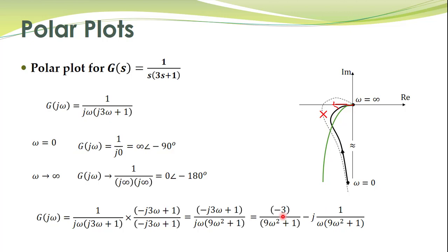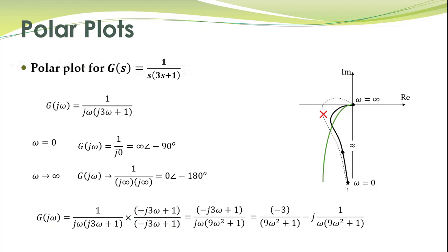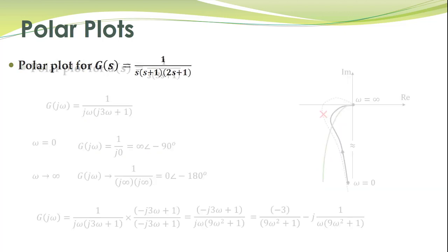So what you see is that as omega tends to infinity, the real part becomes minus 3. So this minus 3 is over here. So that is the polar plot for this transfer function. Here we go. Thank you.